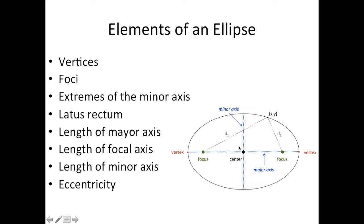The length of the focal axis, which is the length from focus to focus. The length of the minor axis, which is the other side — it's the side that is perpendicular to the length of the major axis. And the eccentricity, which is going to tell us how circular our ellipse is.